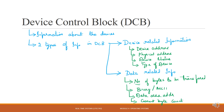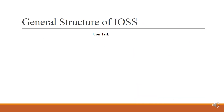To summarize, the device control block (DCB) is a very important block present in IOSS. It holds information about the devices. There are two types of information in the DCB: device-related information and data-related information. Now let us look at the general structure of IOSS, which includes an input-output manager that accepts system calls from the application task.